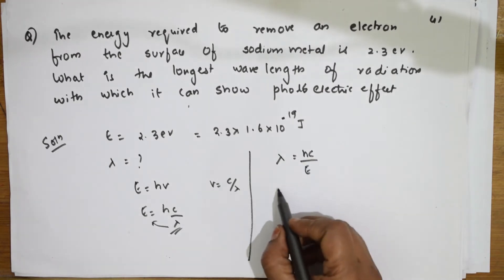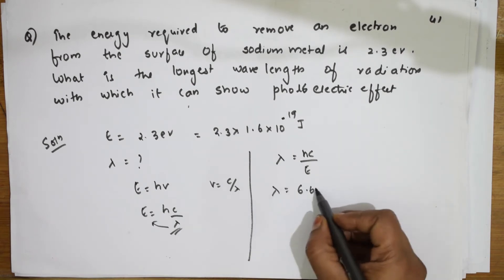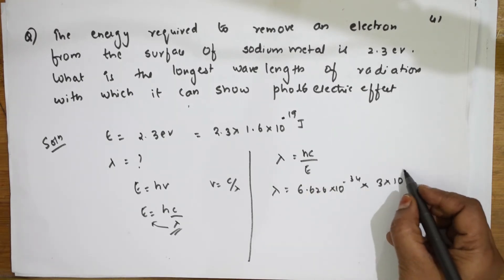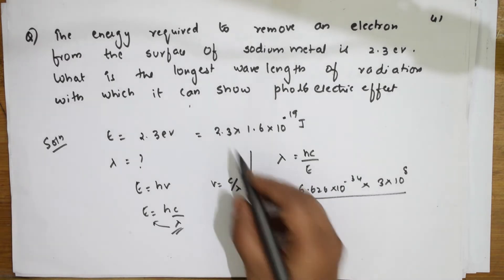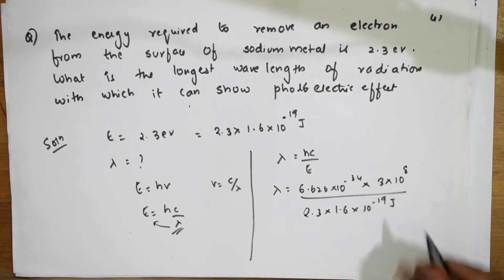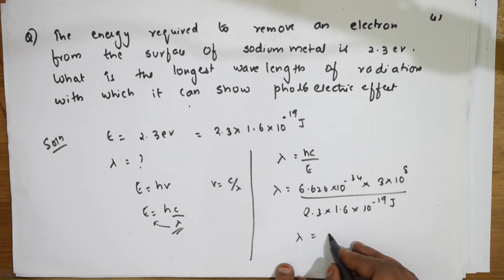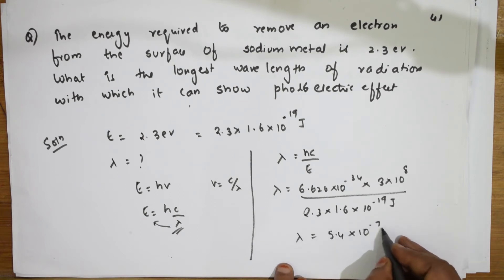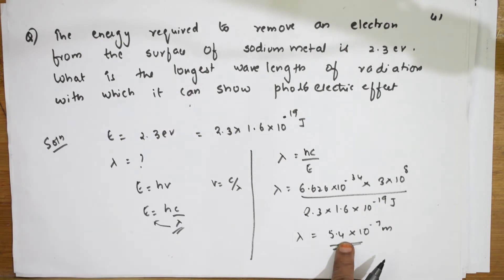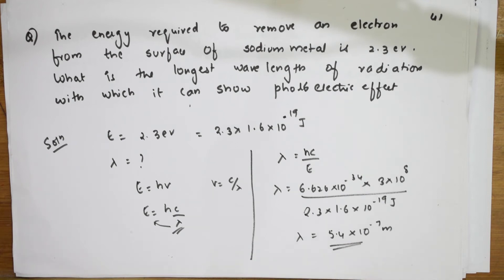Lambda equals 6.626×10⁻³⁴ multiplied by 3×10⁸, divided by 2.3 into 1.6×10⁻¹⁹ joules. When I multiply the whole thing, I get an answer of 5.4×10⁻⁷ meters. So the longest wavelength to show the photoelectric effect is 5.4×10⁻⁷ meters.